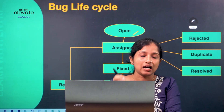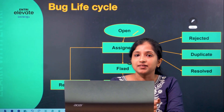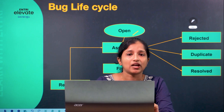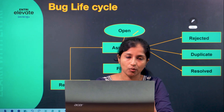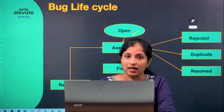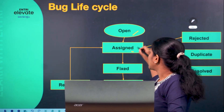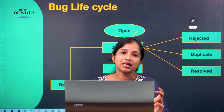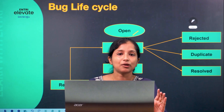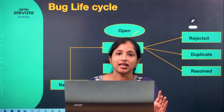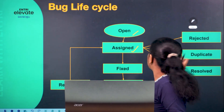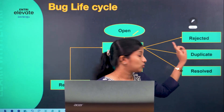This defect is logged in an open state using a defect management tool — it could be a CSV file, Google Docs, or Excel sheets. From the open state, it is assigned to the developer. The developer has three options for handling this defect. One option is rejected.